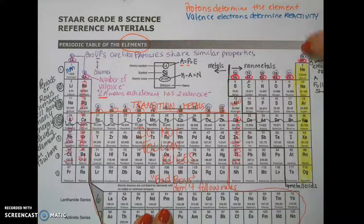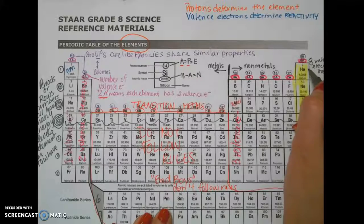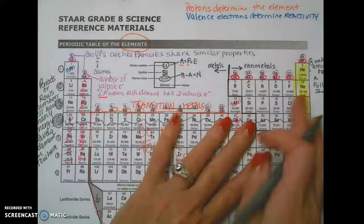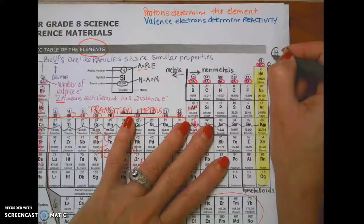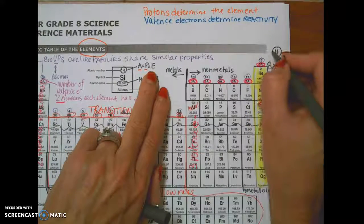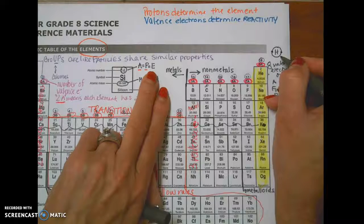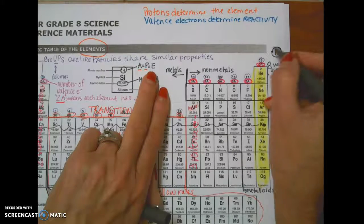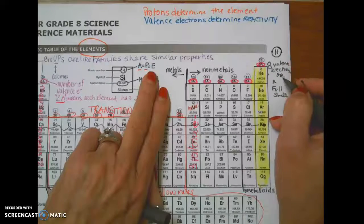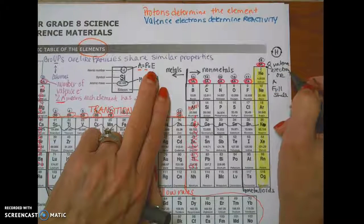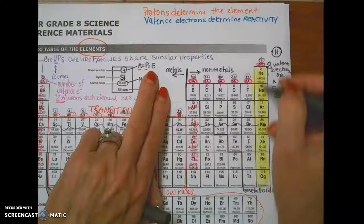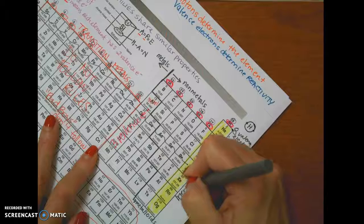Noble gases are all the elements in this family or group that have eight valence electrons or a full valence shell, such as helium. Helium has two electrons on its shell — it only has one shell because the first shell holds two, so these are its outermost electrons, meaning these are its valence electrons as well. If you have a full shell, which helium has, it satisfies the rule of eight, meaning all elements want eight valence electrons or a full shell. The rest of these family members have eight. So these are considered elements that are inert or stable.